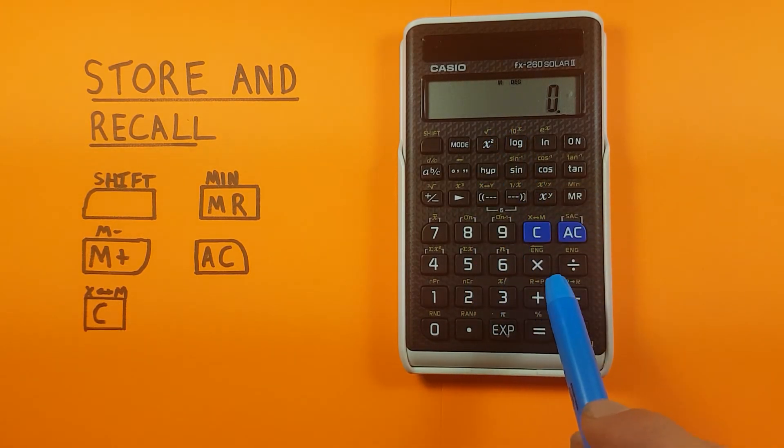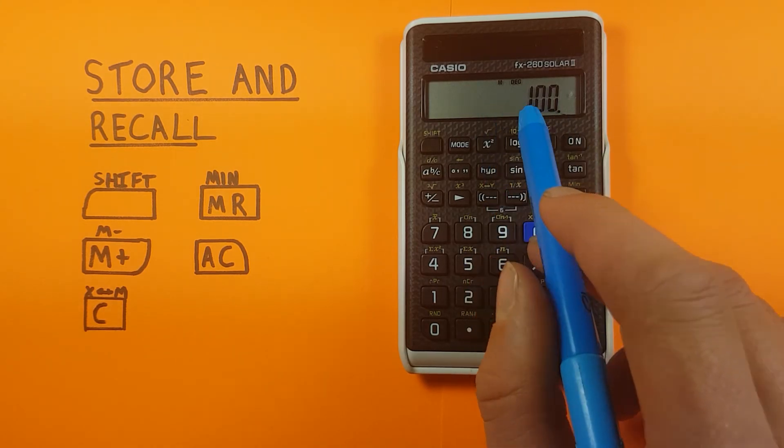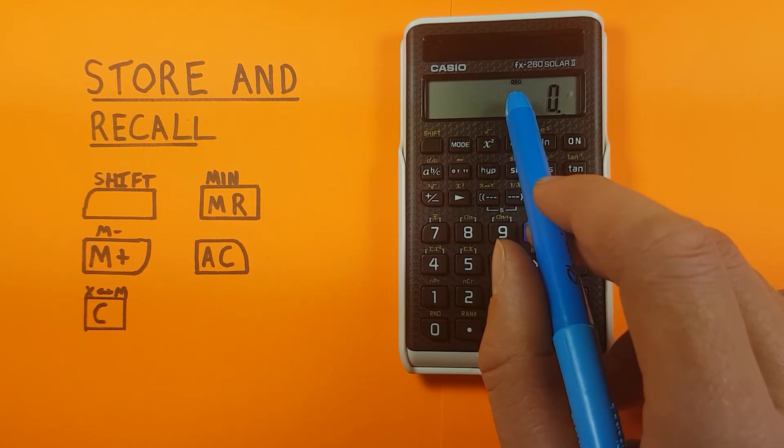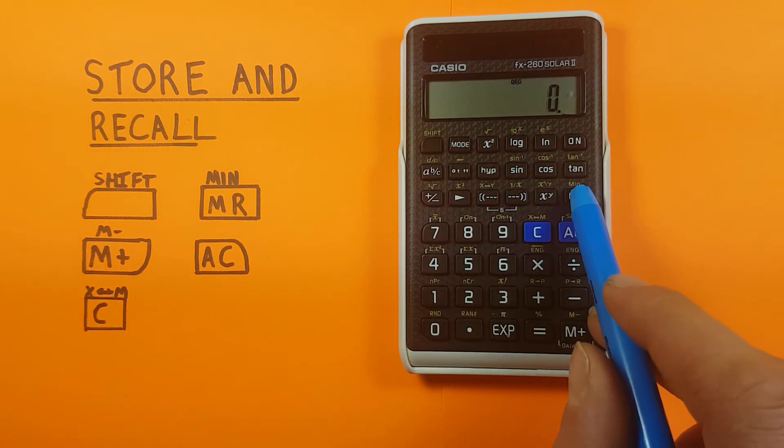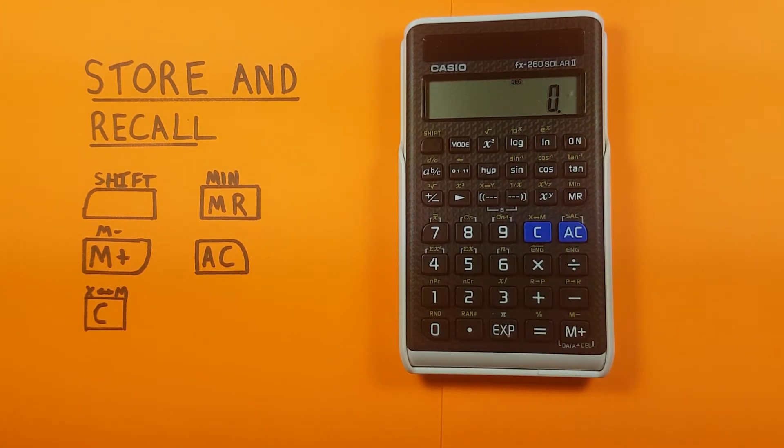What we don't want to do is clear this screen with the ON button because that will clear our memory. Press the ON, and you see that M above there is gone. We press the MR, and nothing comes up. So avoid using the ON button if you have something stored in the memory that you want to maintain.